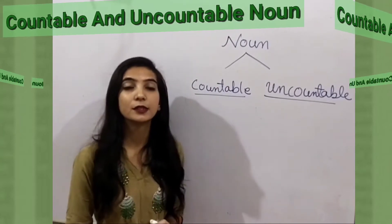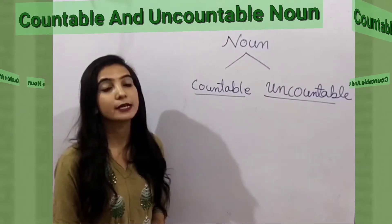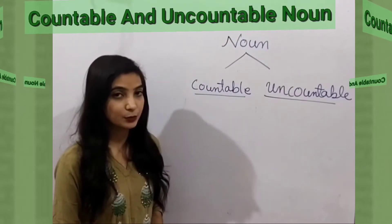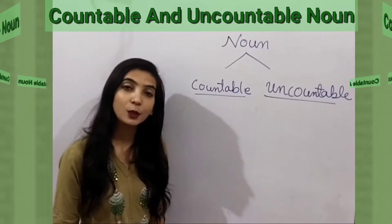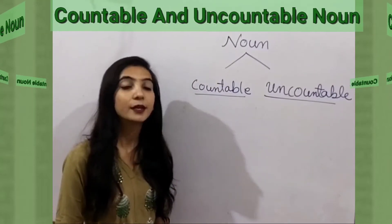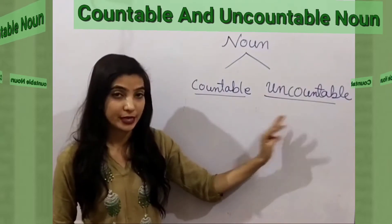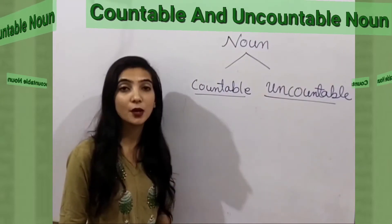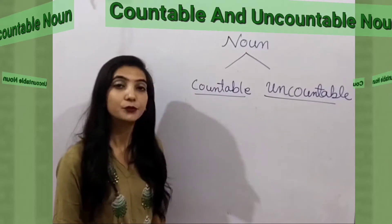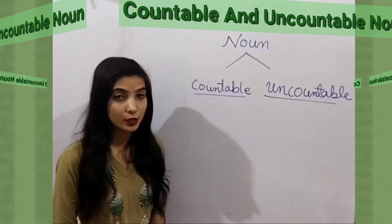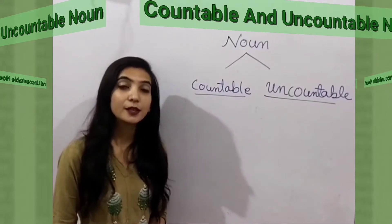The nouns which can be counted are called countable nouns. For example: pen, marker, chair, table, girl, boy, mobile phone. Uncountable nouns are the nouns which cannot be counted. For example: rice, water, sugar, juice, milk, tea, coffee.